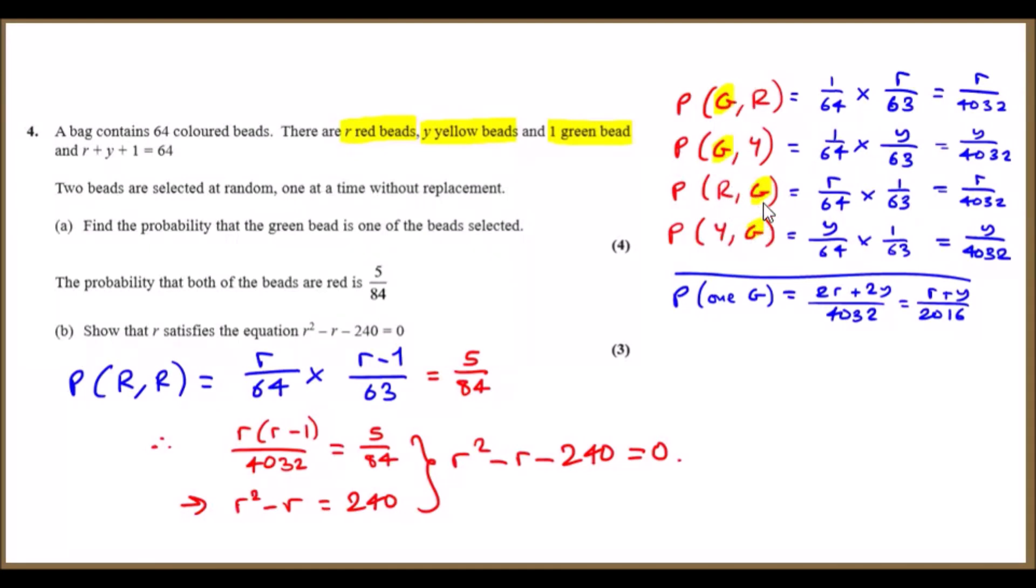So you can see we've got four combinations. Once you do this, you literally just assign probabilities. The probability of taking a green the first time would be 1 out of 64, because that's how many there are. And on the second pick, we notice it's out of 63. The red would be r out of 63 because we still got all the red beads.